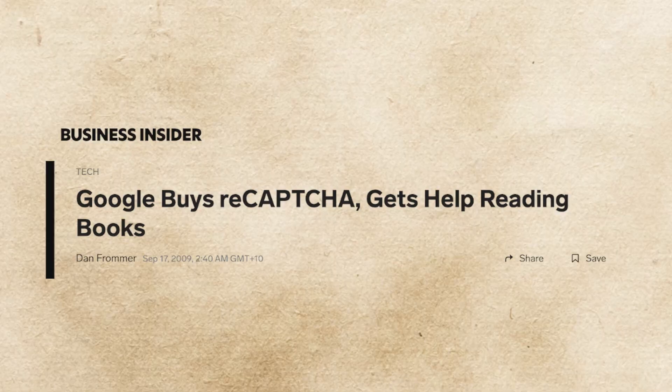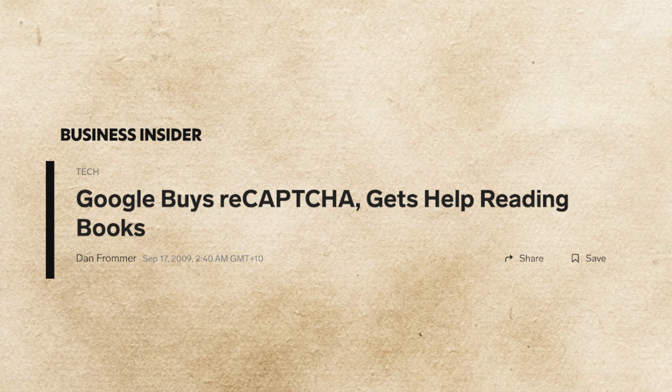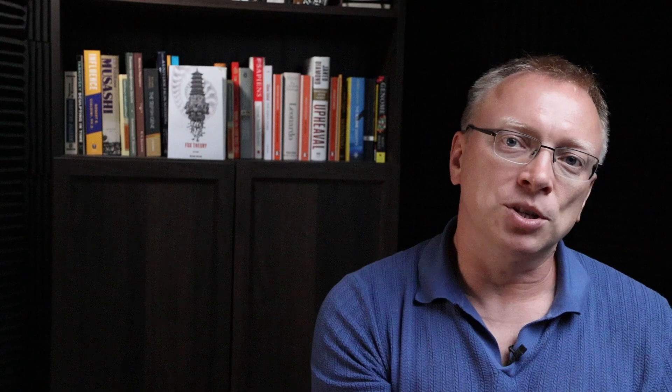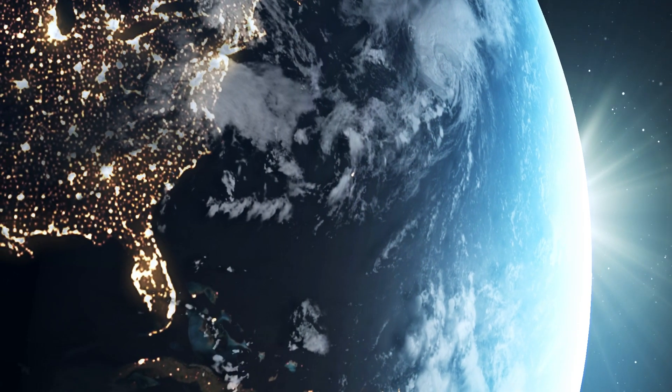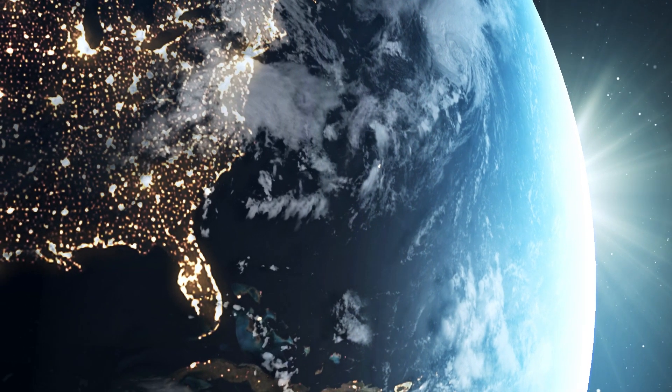CAPTCHA was invented by a genius known under the name Von Ahn. This guy realized that while an internet user is proving that he is not a robot, he could also do something useful, like to babysit an AI model. In 2009, Google acquired CAPTCHA. And this is how we all now babysitting Google AI algorithms. And we, all 5 billion internet users on this planet, we are doing this for free.